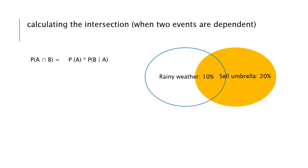And another conditional probability like this. In the rainy weather, the market can sell the umbrella better. So in this case, these two events are dependent and then we can calculate like this.